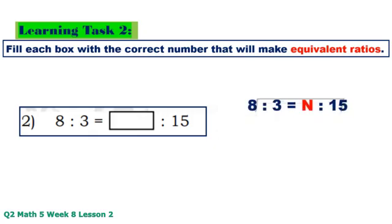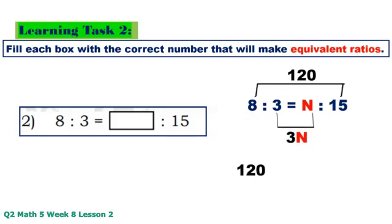Number 2: 8 times 15 equals 120, 3 times N equals 3N. 120 divided by 3 equals 40.